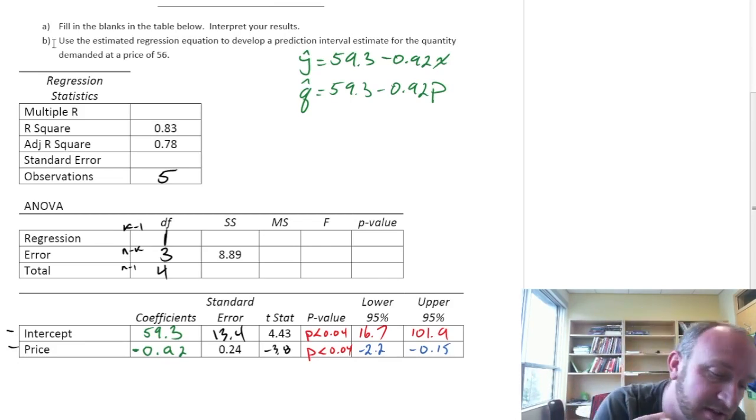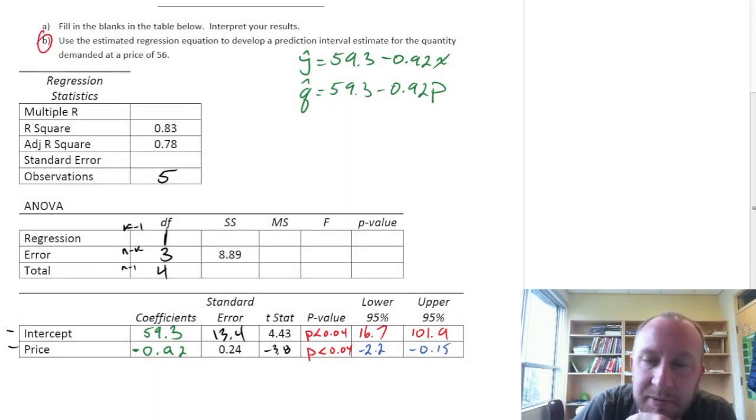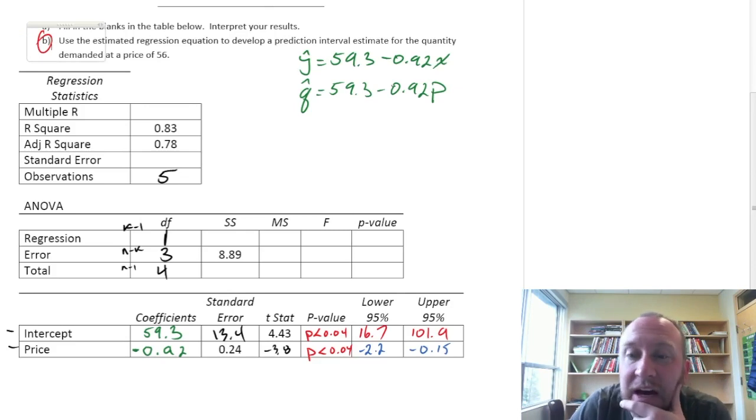Oh and then we still have yet to do actually part B here which is this prediction interval. So we'll maybe get around to that too. Okay so what do we need?